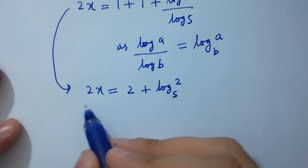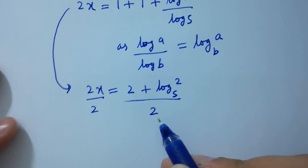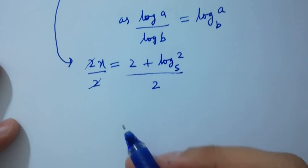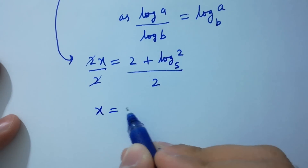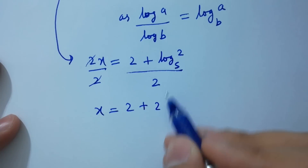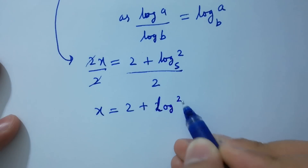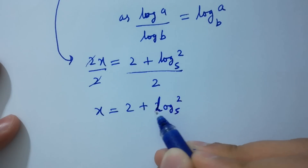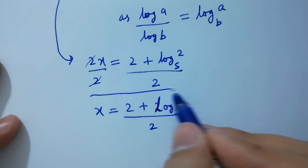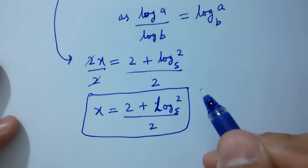Divide by 2 on both sides; 2 and 2 cancel. Therefore x equals 2 plus log 2 to the base 5, all over 2, which is the value of x.